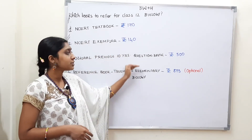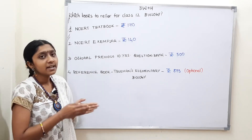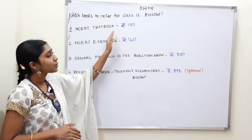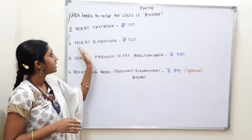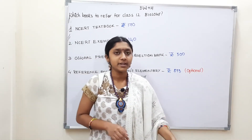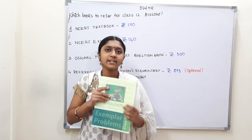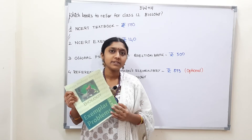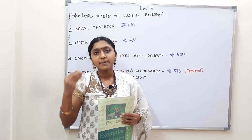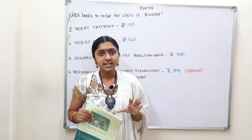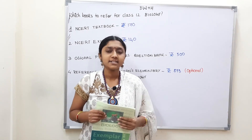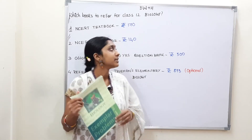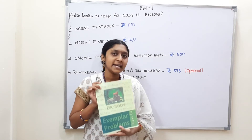There is also the NCERT Exemplar, which is optional. If you have finished the main textbook, or if your aim is 95 plus marks, then you can refer to this book. It is a complementary textbook. The NCERT Exemplar for Biology is around 140 rupees and it is a small book. It contains many objective questions, short answer questions, and long answer questions. Referring to all these questions gives concept clarity, and there are detailed explanations for MCQs, short answers, and long answers. This is the best book for 140 rupees for Class 12 Biology.